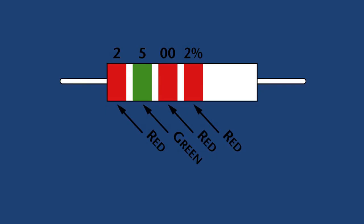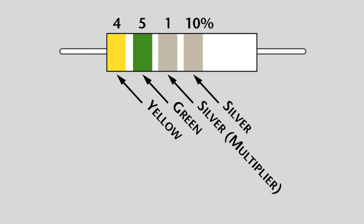Here is another example of determining a resistor's value by the colored bands. This resistor has a rating of 2,500 ohms plus or minus 2%. In this example, the first silver band is a multiplier of 1/100, giving us a total value for this resistor of 0.45 ohms plus or minus 10%.